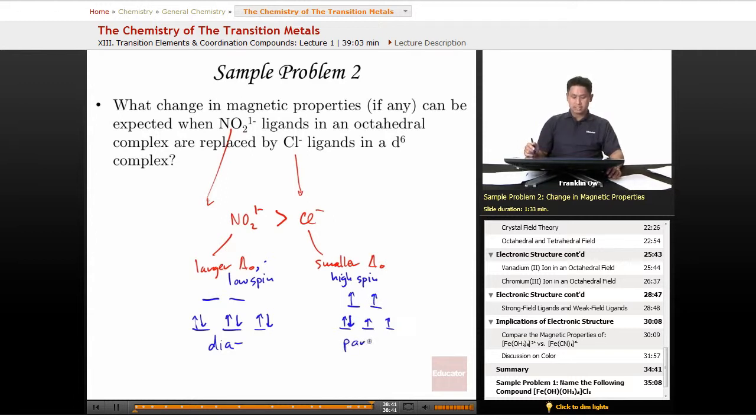To answer this question, when you replace the NO2^- ligands with the Cl^- ligands, you go from a compound that's diamagnetic to one that exhibits paramagnetism.